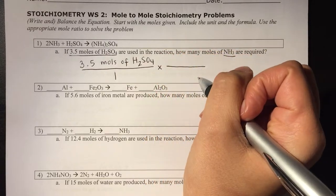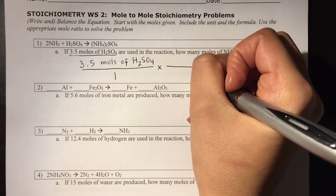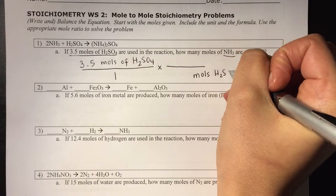Now if we remember, whatever I'm trying to get rid of, I want to put that at the bottom. So if I have moles of H2SO4 here, I'm going to put moles of H2SO4 here.